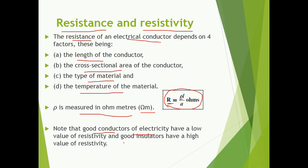Whereas for poor conductors, the value of resistivity will be high, meaning the opposition to the flow of current — resistance — is high.